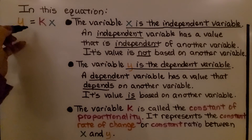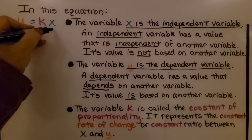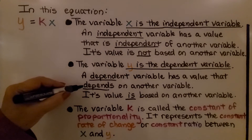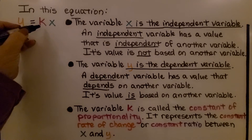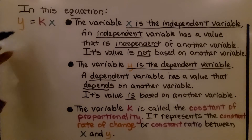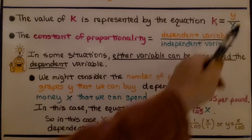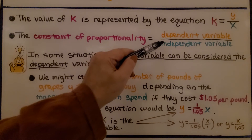In the equation y = kx, x is the independent variable — its value is not based on another variable. The variable y is the dependent variable, whose value depends on another variable. The variable k is called the constant of proportionality; it represents the constant rate of change or constant ratio between x and y. The value of k is given by k = y divided by x, meaning the constant of proportionality equals the dependent variable divided by the independent variable.